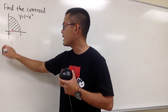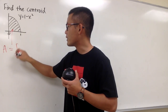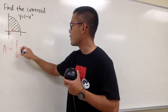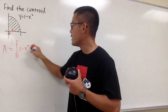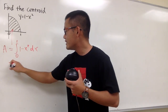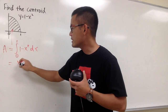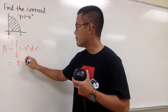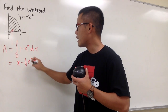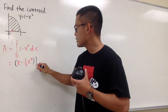Let me indicate that. For the area, we have to integrate from 0 to 1 of this curve, which is just 1 minus x squared, dx. And let's go ahead and do that.